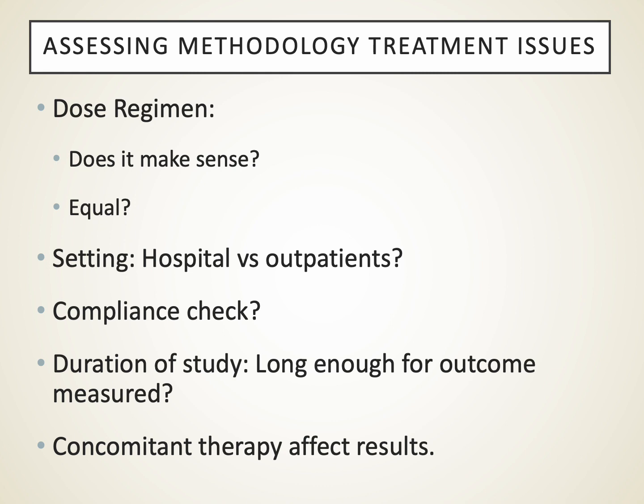You also want to know — was it done in a hospital or outpatient setting? Did they have some way of assessing that patients took their medications? Was the study conducted long enough for the outcome measured? For treatment of depression, you often want at least three to six months, since some antidepressants don't reach full effect until the second, third, or fourth month. You also want it long enough to measure for adverse effects that may accumulate over time but not be seen in a short course of therapy.